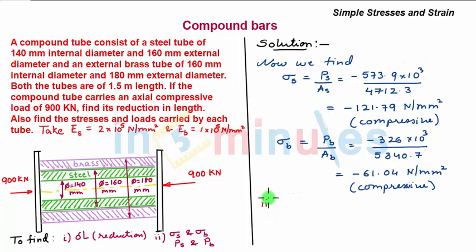After finding the stresses, we now find the deformation. Let us find delta L for steel. Delta L of steel is PS times L over AS times ES.